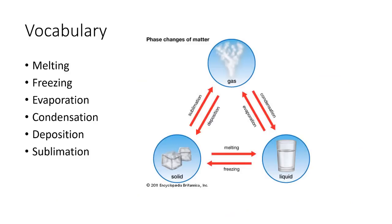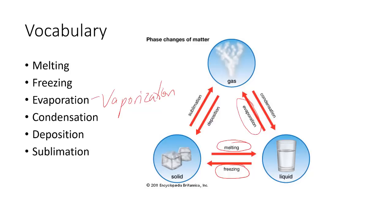Next we need to know the vocabulary for moving between phases — phase changes. Going from solid water to liquid water is called melting; liquid to solid is freezing. Going from liquid to gas is called evaporation or vaporization — vaporization is the better term since boiling is also a type of vaporization. Condensation is going from gas to liquid; think of water molecules in the air hitting a cold soda can and slowing down enough to form liquid.